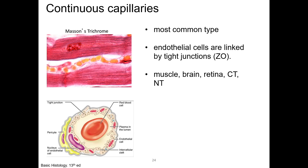The first type of capillary is the continuous capillary. These are the most common type and are found in muscle, brain, lungs, connective tissue, and nervous tissue. These capillaries are lined by a complete endothelium and a basal lamina, and the capillary endothelial cells are linked by tight junctions. They are also associated with specialized cells called pericytes. These cells have some characteristics of smooth muscle and are in close contact with the basal lamina. We'll talk more about their function shortly.